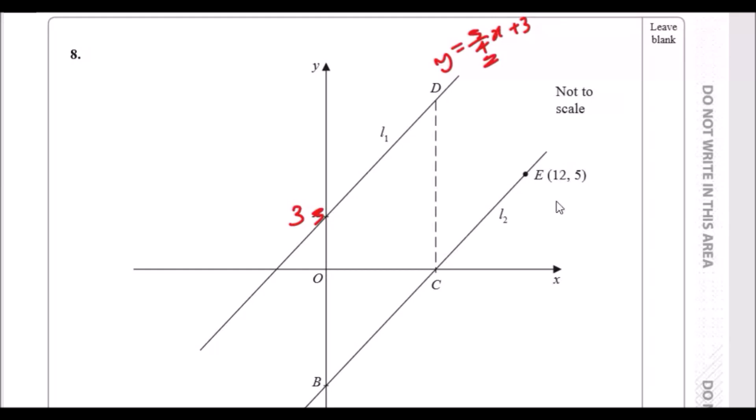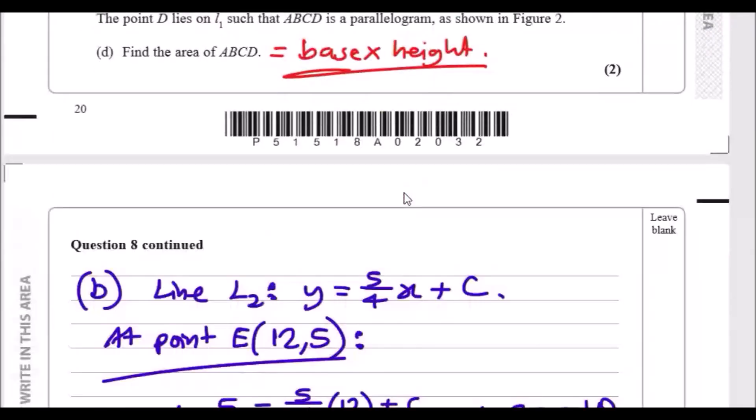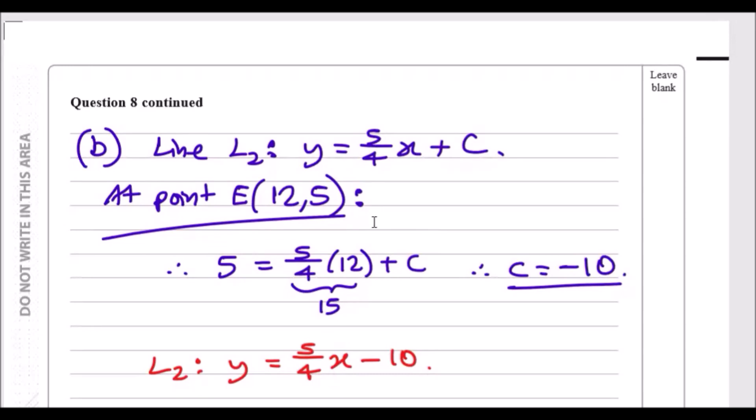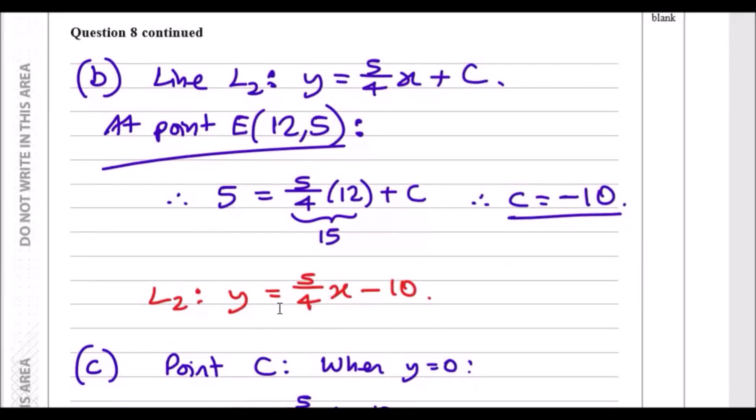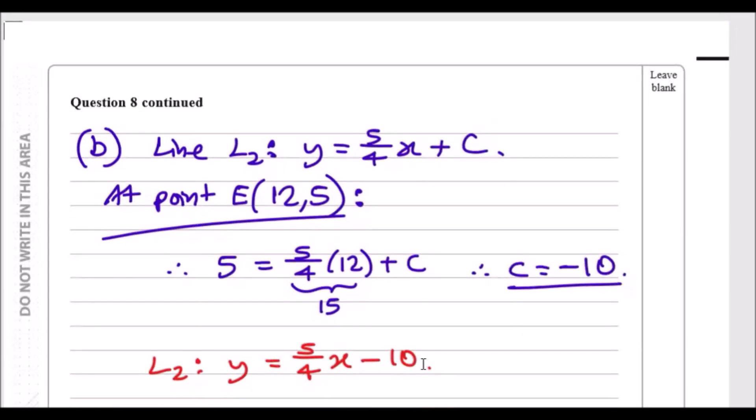We know that the equation line so far is y = 5/4x + c, and we can use this point (12, 5) because it's on the line to determine the value of c. At point E, you can literally plug this in: x is 12, y is 5, into this L2 equation and just solve for c. When you plug in y is 5 and x is 12, you can simplify 5/4 times 12 into 15 because 4 goes into 12 three times. Quick mental math, solve this, and your c is negative 10. That's your line for L2: same equation but minus 10.